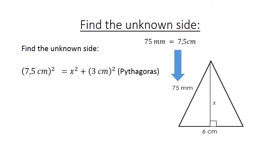Your 6 cm. You must divide by 2. That is where the 3 cm is coming from. 56.25 cm squared equals x squared plus 9 cm squared.